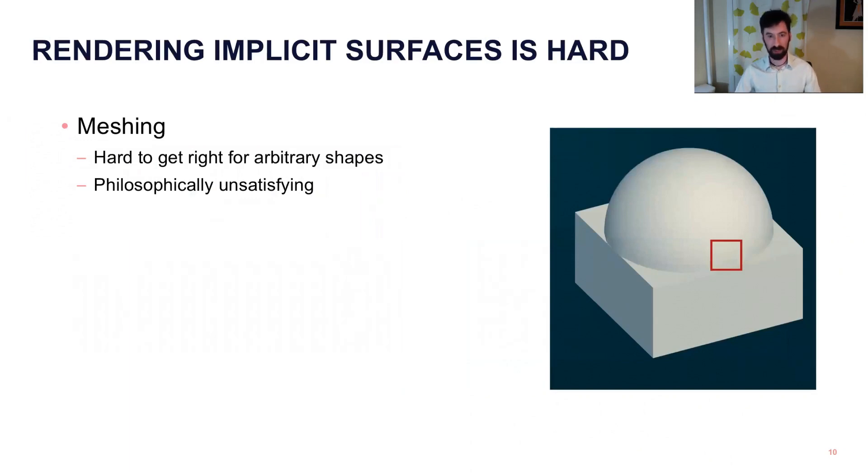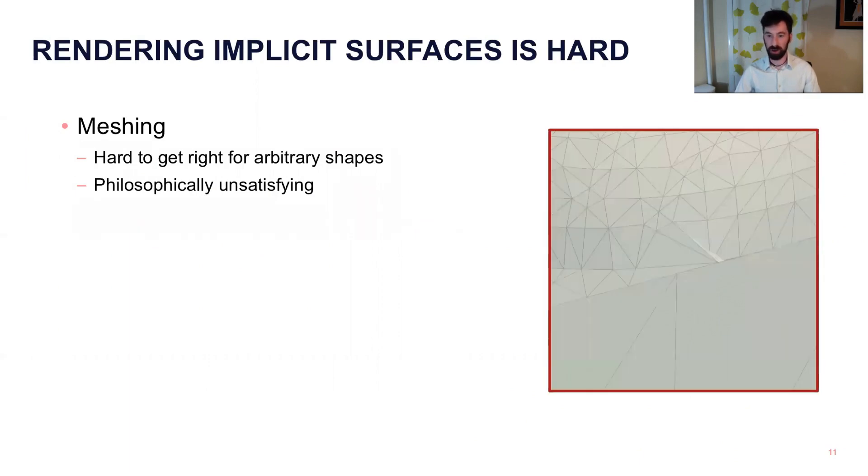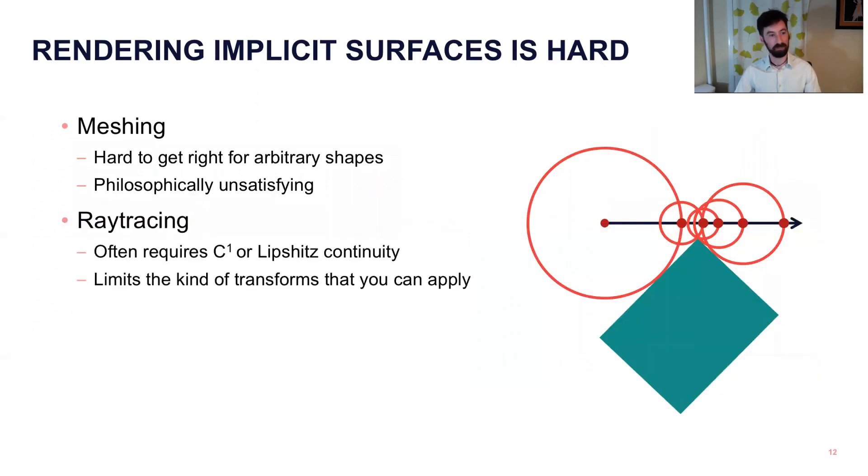One strategy, and there's a bunch of literature on different ways of meshing these surfaces, so you generate triangles and then you render those conventionally, but it's hard to get that right. So you'll have non-manifold shapes, self-intersections, getting edges and corners to be sharp is always a challenge. There's also a bunch of literature on ray tracing, but that often constrains the shapes where you'll need C1 continuity or Lipschitz continuity, otherwise your sphere tracing will just zoom by the shape and just miss the surface.